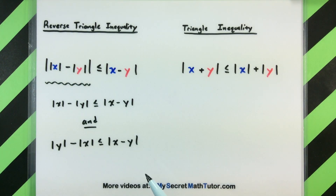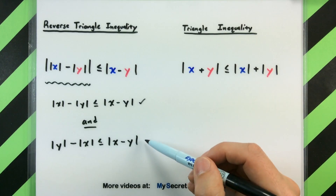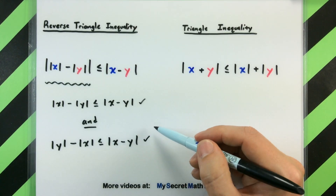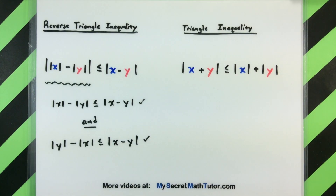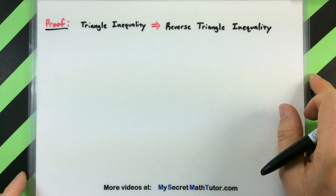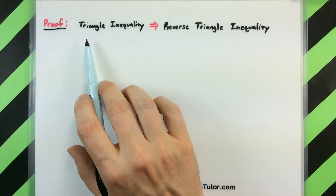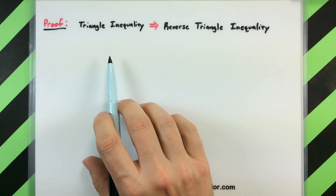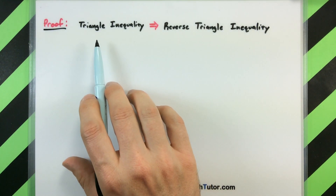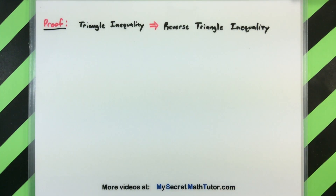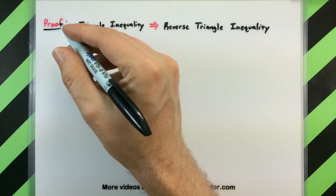When we get into the proof, we'll actually have to prove both of these individual statements and that will give us the reverse triangle inequality. In this proof of the reverse triangle inequality, we will actually leverage the regular triangle inequality. What I'm saying is that we're going to assume we already know the regular old triangle inequality and we're going to use that to prove the reverse one. It's kind of a neat technique.